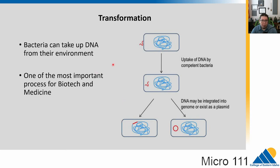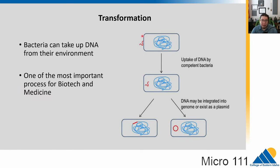Transformation is the process of bacteria taking up DNA from their environment. A bacterial cell has its chromosome inside, and there's a small molecule of DNA outside. Through transformation, the bacteria takes that DNA in and incorporates it either into its genome or makes it into a little plasmid. This could be an antibiotic resistance gene that enters the microbial cell, making it resistant and giving it a huge fitness advantage — for example, in a hospital setting where it picks up a piece of environmental DNA.